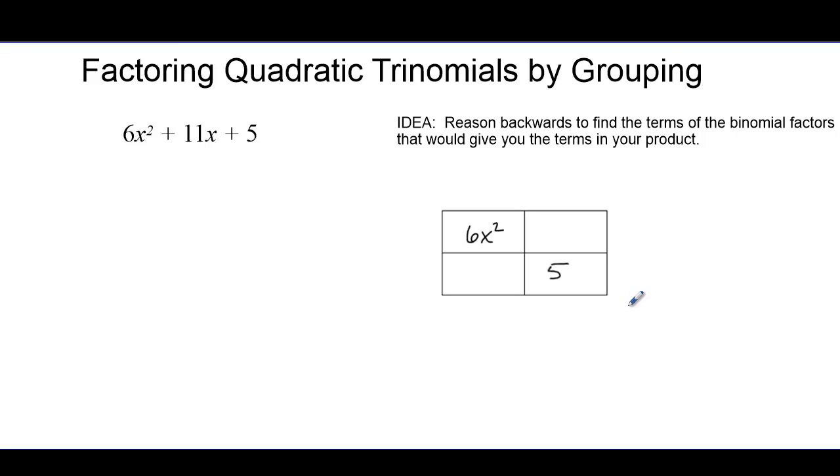So rather than just guessing, I'm going to actually use a strategy here. And the fact that I know that the inside of my area model should come from the terms of my trinomial, and that the diagonal products have to match. So when I multiply the terms on my diagonal, I get 30x². And I know that when I add these up, I should get my 11x's, some x's here, some x's here, and that when I multiply on the diagonal, I should also get 30x².